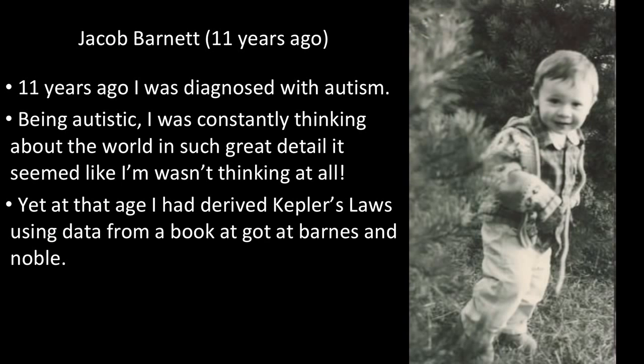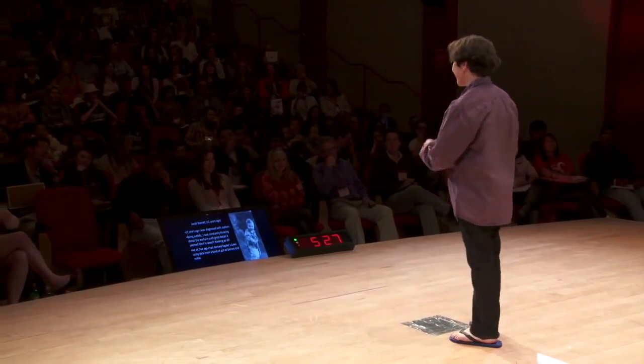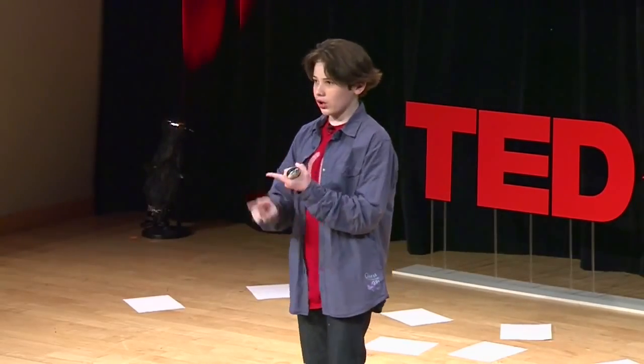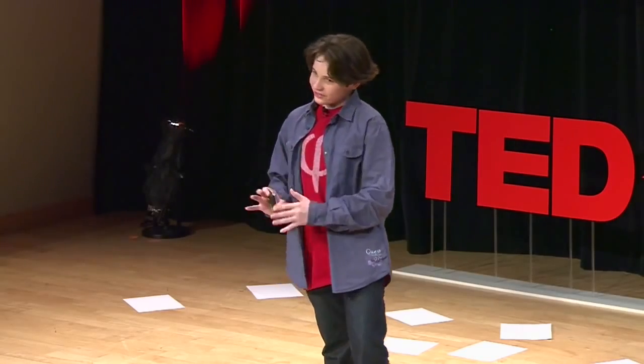Let me formally introduce myself, because I did not do that at the beginning of the talk. About 11 years ago, I was diagnosed with this thing called autism. What that meant was, I was focusing on things in such extreme detail that it seemed like I wasn't thinking at all — basically noticing every reflection of light and every shadow. Because of that, people thought I would never learn, because it just looked like I was staring into space. People told me I would never learn, never think, never talk, never tie my shoes — which, okay, they might have had a point, I'm wearing sandals. At that age, I went to Barnes and Noble, got a textbook, and from the data in the textbook I derived Kepler's laws, when I wasn't supposed to be learning or thinking at all.